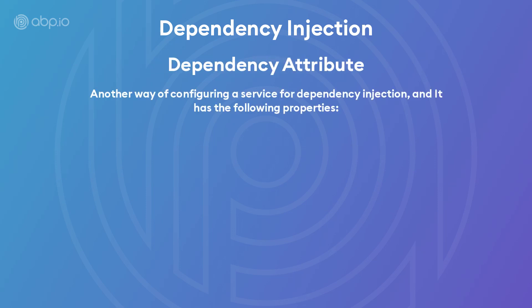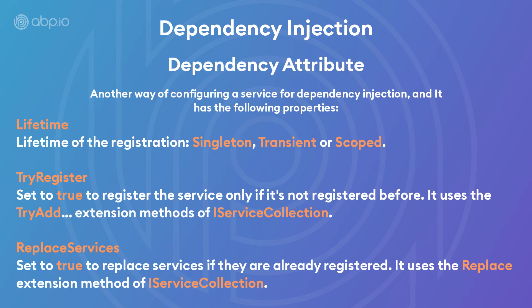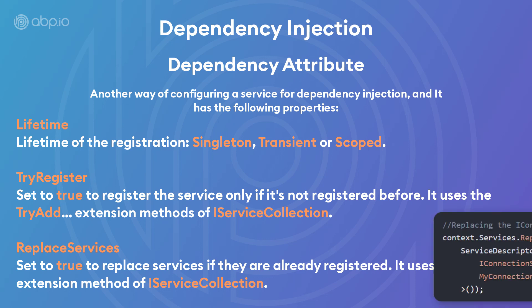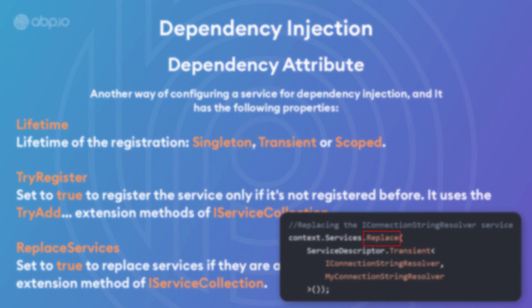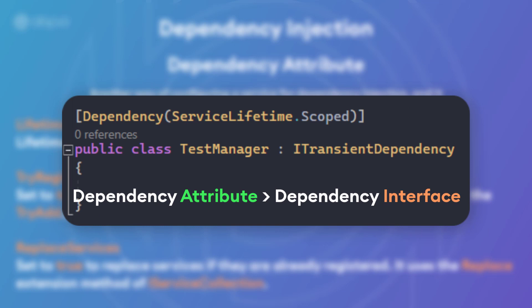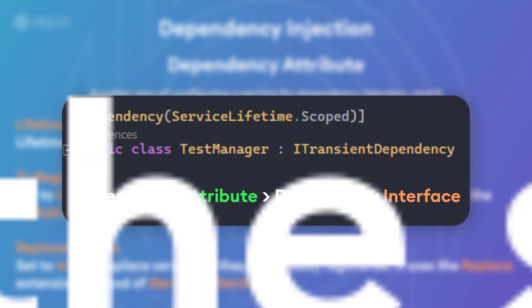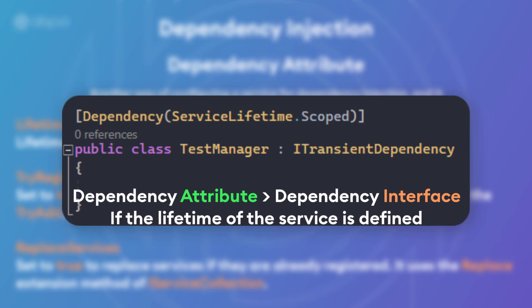Another way is the dependency attribute, which has the following properties: Lifetime, to determine the lifetime of the registration; TryRegister, to try and register the service only if it's not registered before; and ReplaceServices, to replace services that are already registered. You could also use the iServiceCollection Replace method of the Microsoft dependency injection library. The dependency attribute has higher priority than other dependency interfaces if it defines the lifetime property.